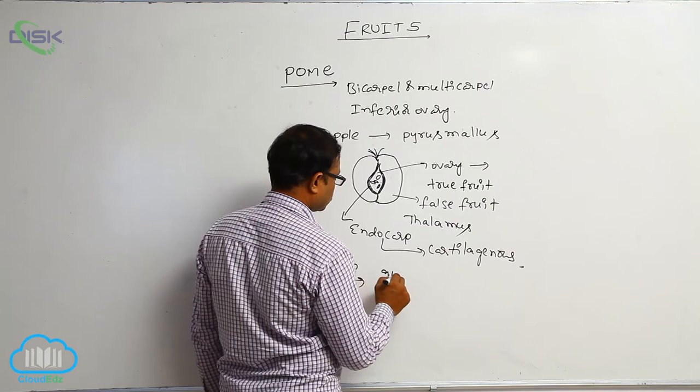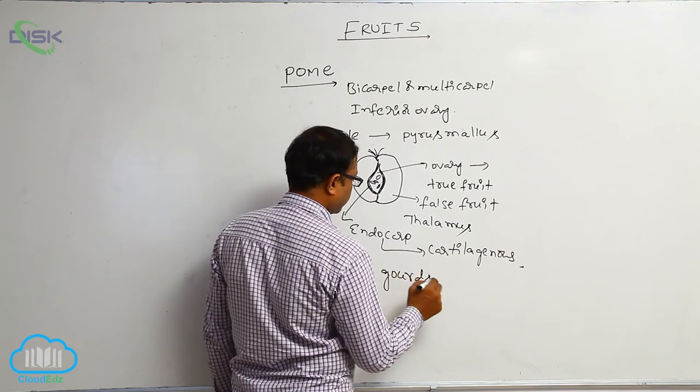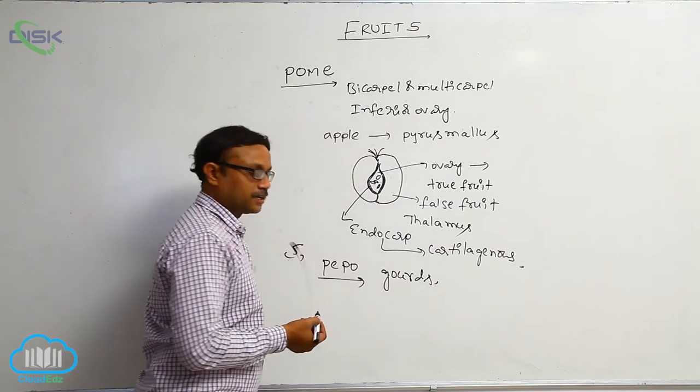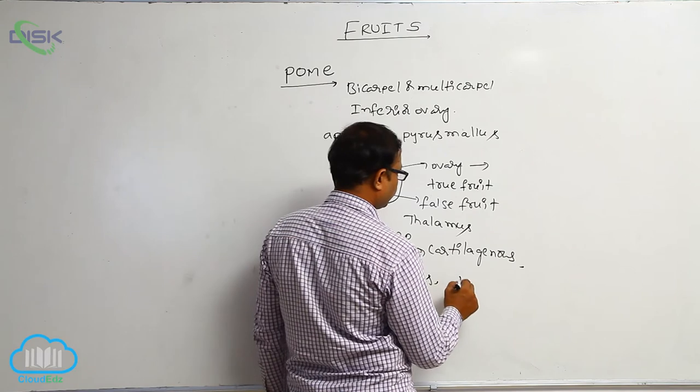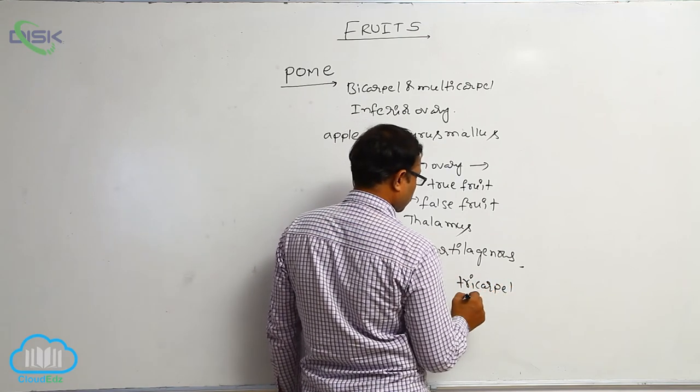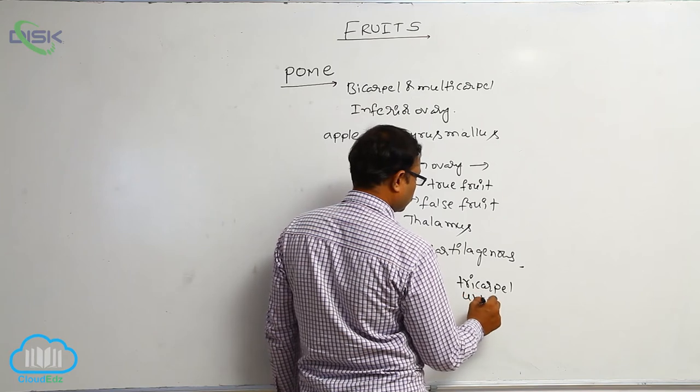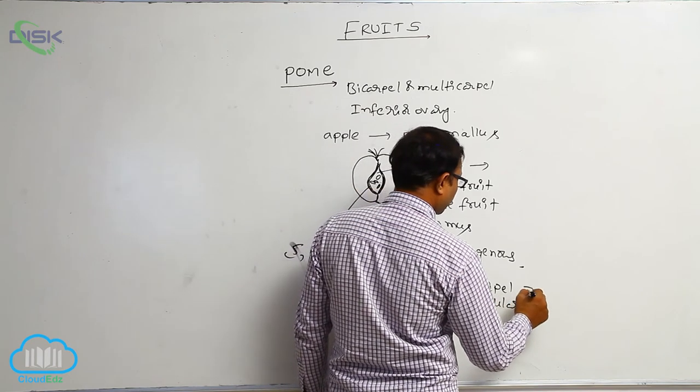All gourds—it means watermelon, all of those belong to Pepo. The fruit is formed from tricarpel, unilocular, inferior ovary.